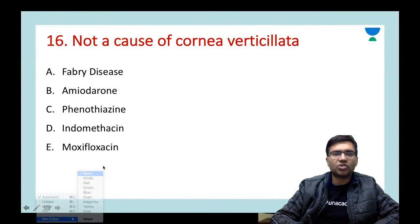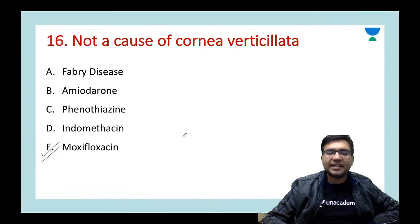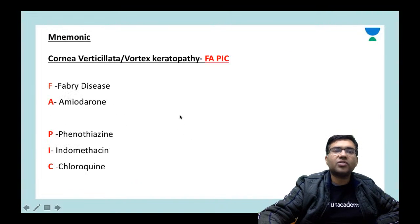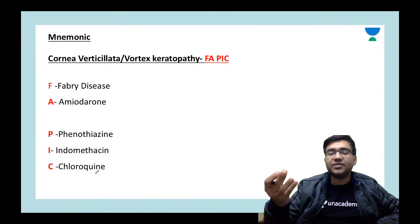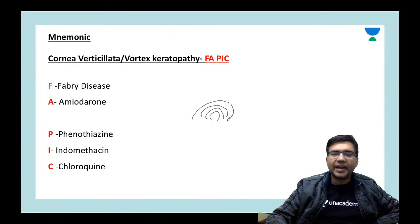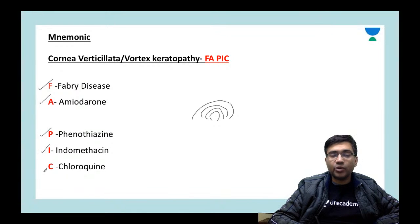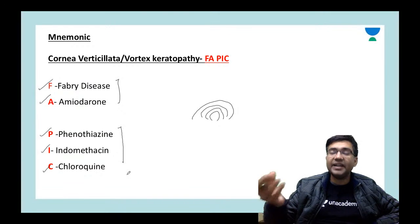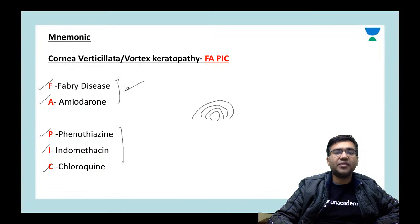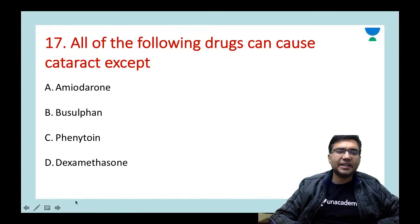Next question: which is NOT a cause of cornea verticillata? Options: Fabry disease, amiodarone, phenothiazine, indomethacin, or moxifloxacin. The answer is E — moxifloxacin. Cornea verticillata (vortex keratopathy) is drug deposition in the sub-epithelial layer in a vortex pattern. It usually does not impair vision and disappears once the drug is stopped. Remember the mnemonic 'FA PICTURE': F = Fabry disease, A = amiodarone, P = phenothiazine, I = indomethacin, C = chloroquine.